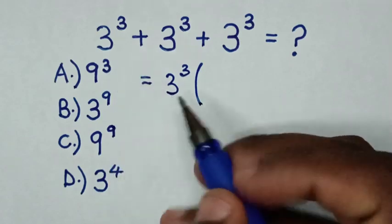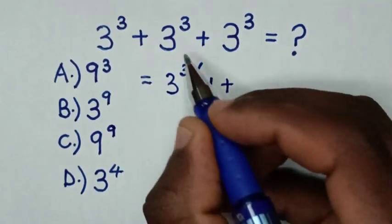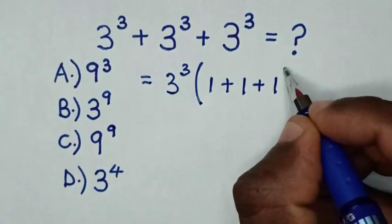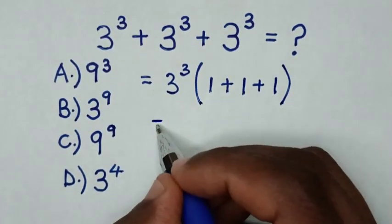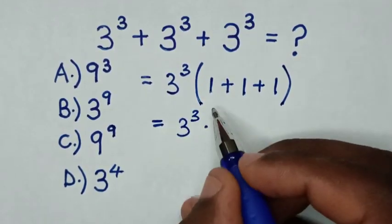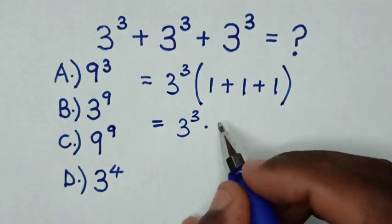Then this divided by this is 1, plus this divided by this is 1, plus this divided by this is 1. Then it is equal to 3 power 3 times 1 plus 1 plus 1 is 3.